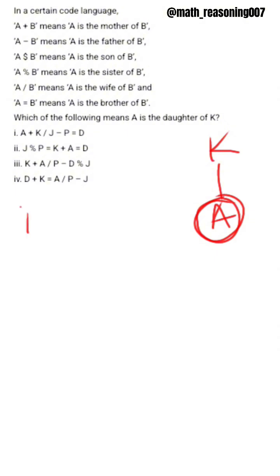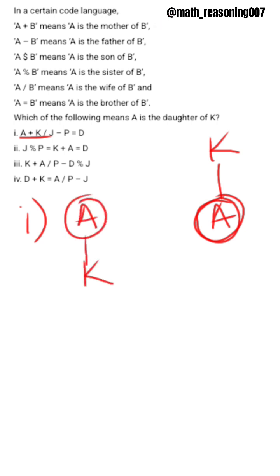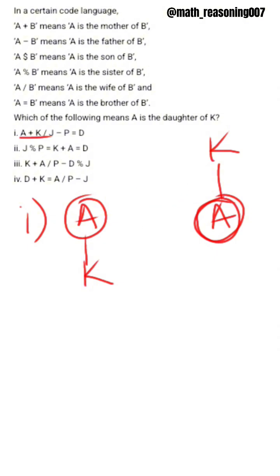In option 1, A plus K. From this code, A is mother of K. These are not equal, so option 1 is wrong.